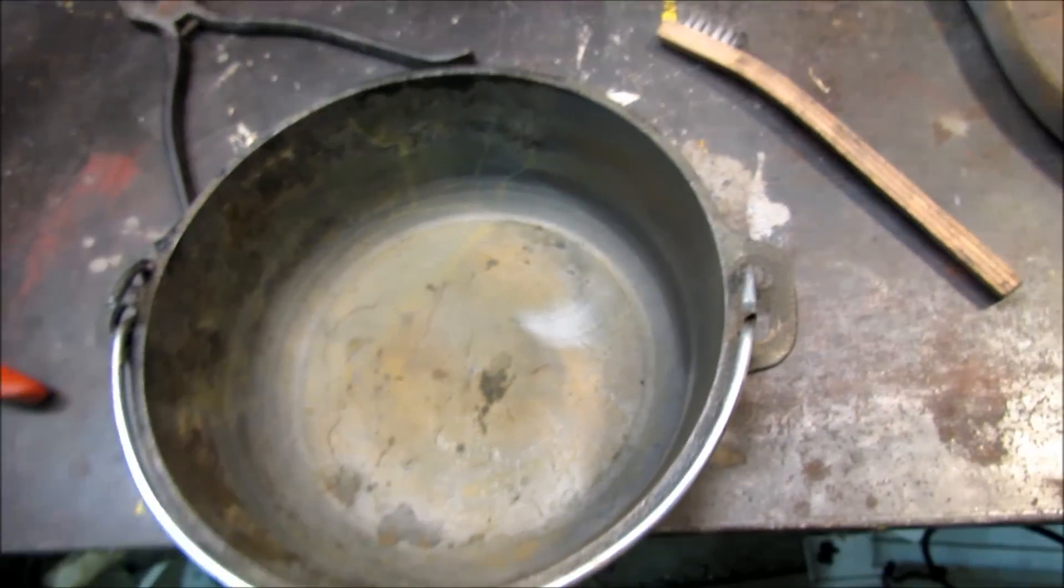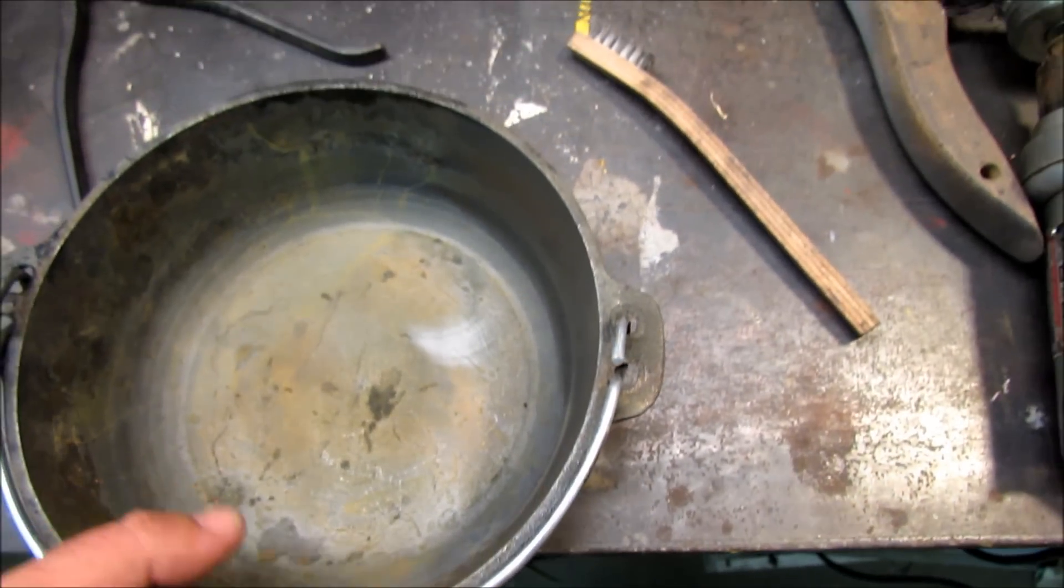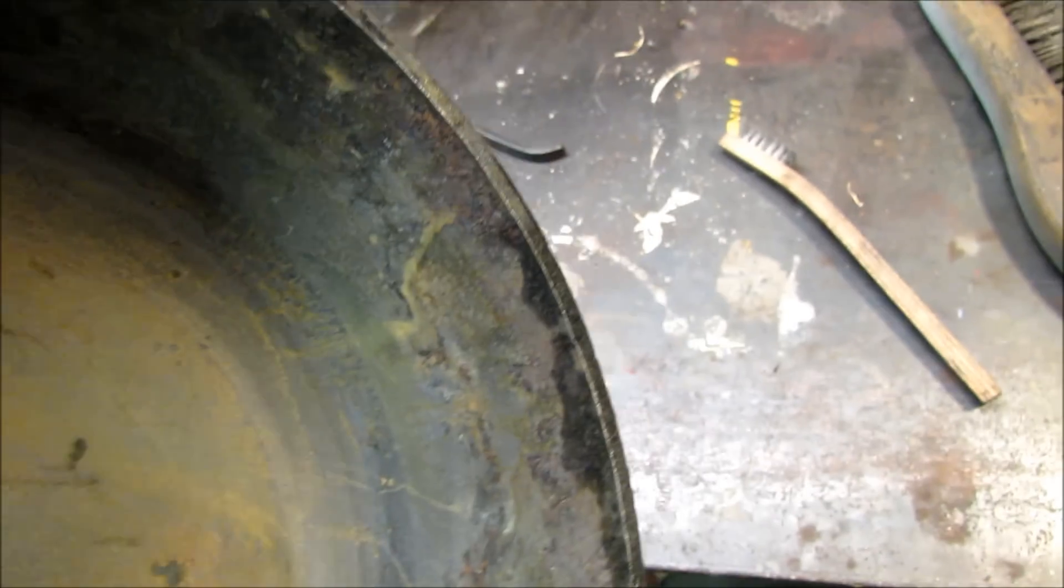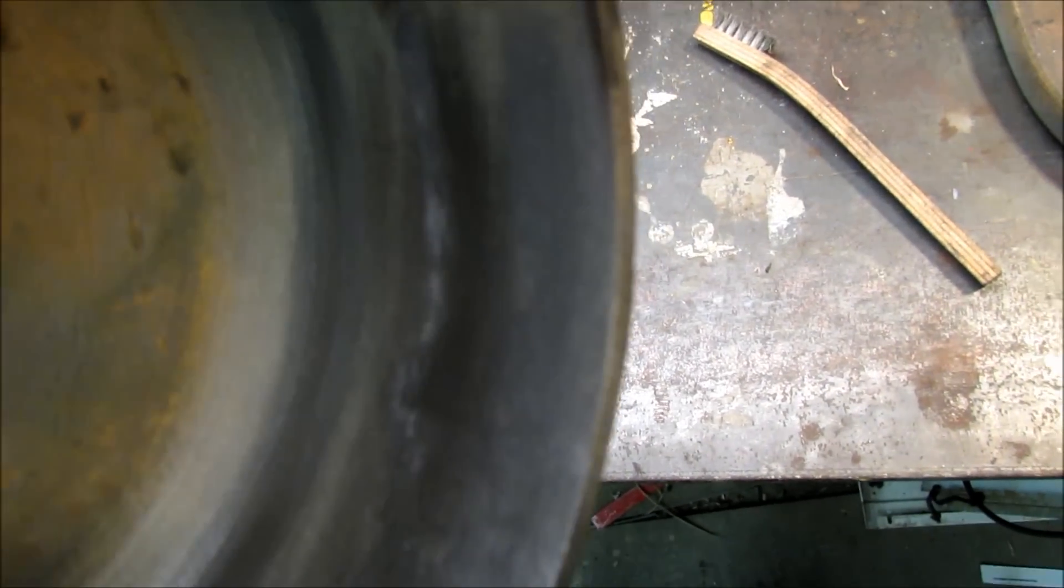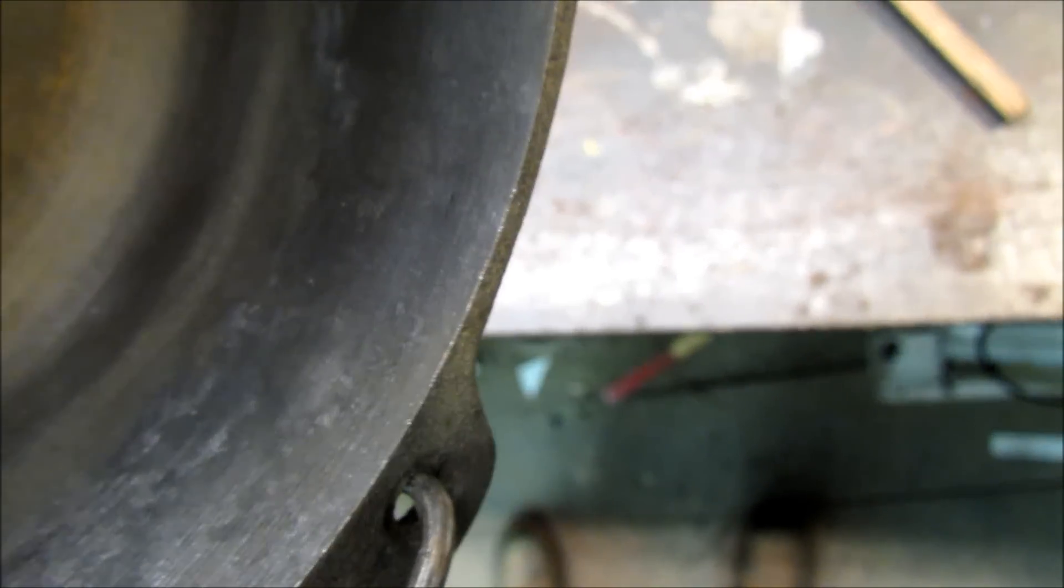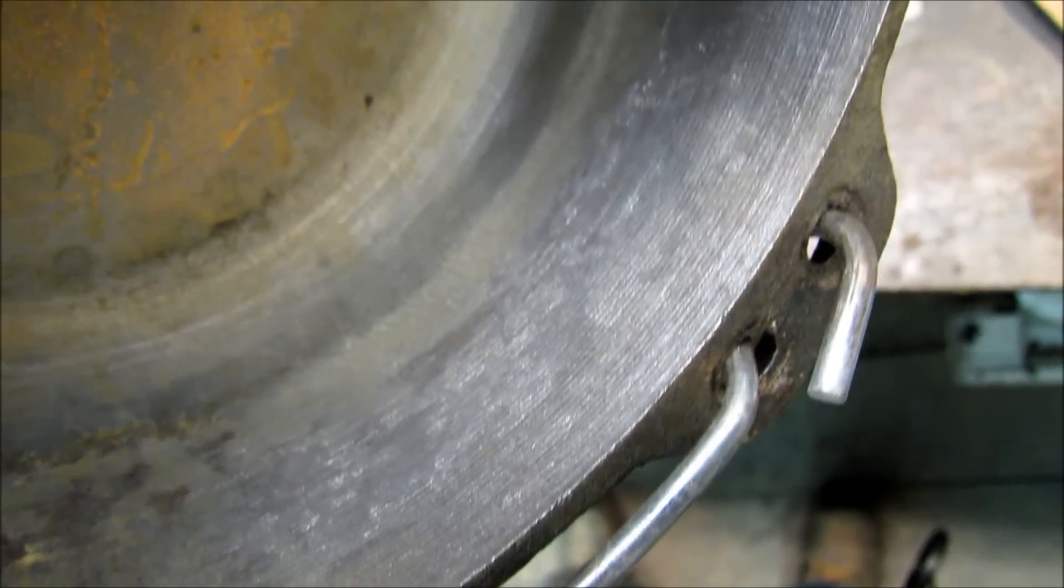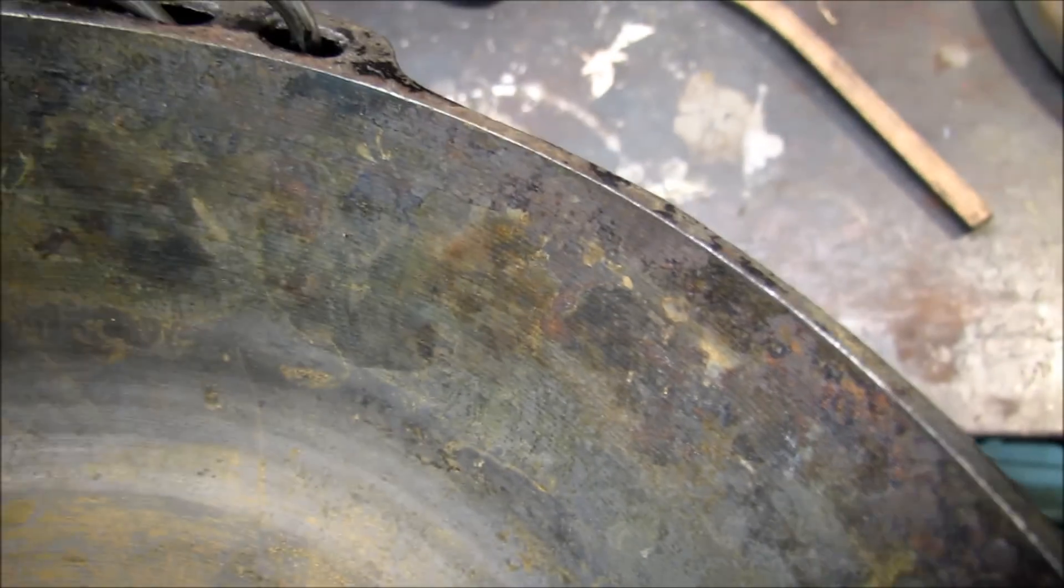Alright, I've pulled it out of the electrolysis bucket. You can see where the rust has kind of turned black where the pitting was. And I've hit it with a wire wheel a little bit right there. It cleans up very quickly. You don't have to sit there sucking rust dust. I'll clean it up some more and show you that.